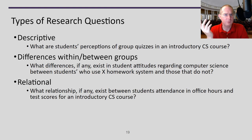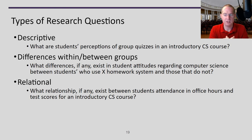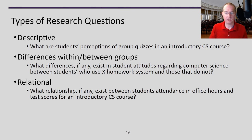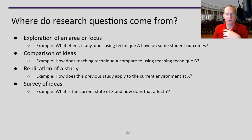So when you're coming up with a research question, what types of research questions are out there? There's the descriptive kind: 'What are students' perceptions of group quizzes in an introductory course?' — it's broad, exploratory, without a specific comparison. There are differences-between-groups questions: 'What differences, if any, exist in student attitudes regarding computer science between students who use X and those that do not?' — now we've set up basically an A-B testing environment with some students using one versus not. And then relational: 'What relationship, if any, exists between students' attendance in office hours and test scores for an introductory course?' — instead of an A-B test, these are two things going together, as X goes up, does Y go up as well?